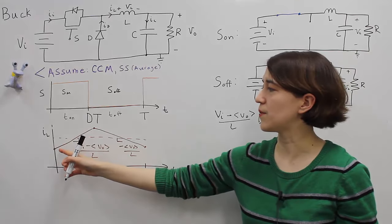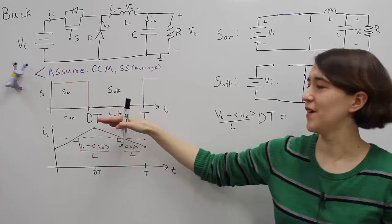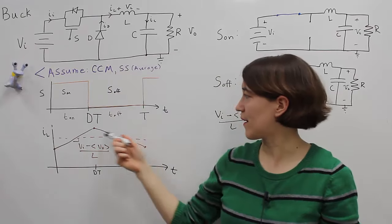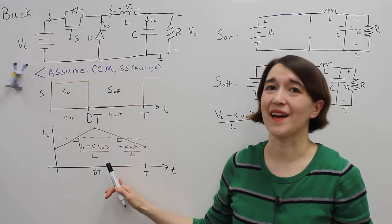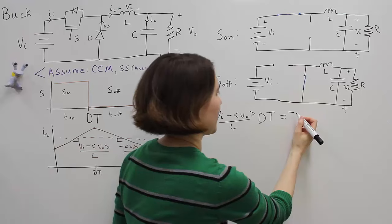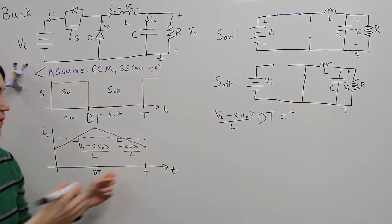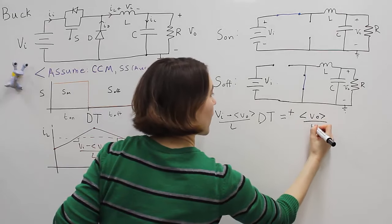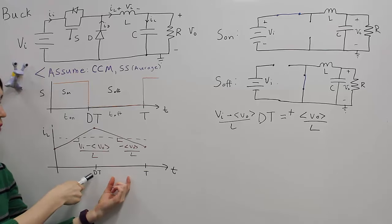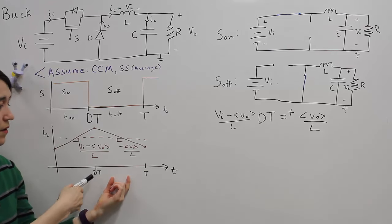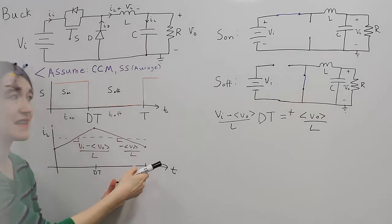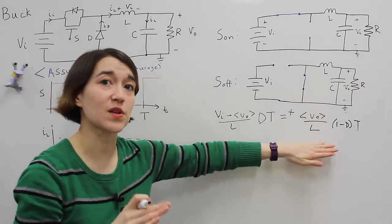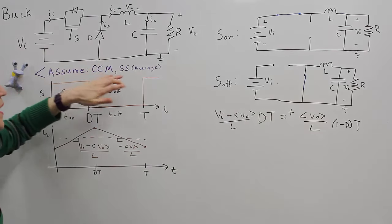We know that the rise has to be equivalent to the drop. So we set these equal: (V_in − ⟨V_out⟩) / L × D·T = ⟨V_out⟩ / L × (1 − D)·T. This is our volt-second balance equation, and it must hold true for continuous conduction mode and average steady state.